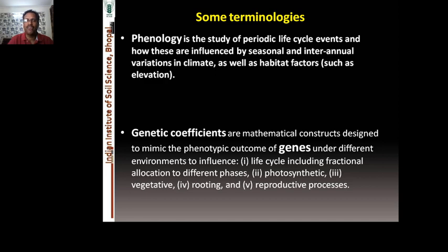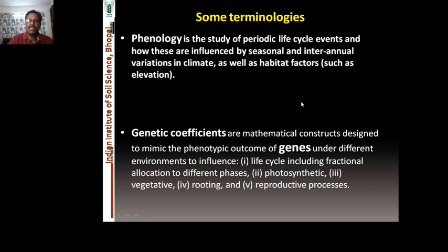Some important terminologies for calibration: phenology is the study of periodic life cycle events and how they are influenced by seasonal and interannual climate variation as well as habitat factors such as elevation. Genetic coefficients are mathematical constructs designed to mimic the phenotypic outcome of genes under different environments, influencing the life cycle including fractional allocation of different phases — photosynthetic, vegetative, rooting, and reproductive processes. These are important when calibrating the model, as we simulate different stages of plant growth and match observed values with predicted ones.